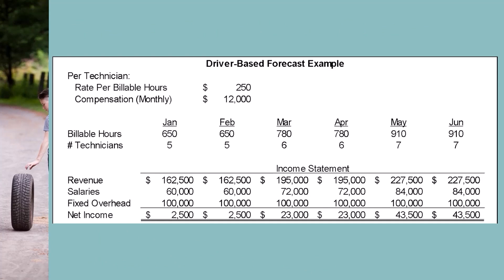Having only one driver number in the model allows easier modeling and sensitivity testing. However, you may want to enter these drivers for each month to allow variations by month, which can improve accuracy. Both compensation amounts and bill-out rates may increase in future months. The middle section shows two more drivers — these are set each month because I expected them to change from month to month.